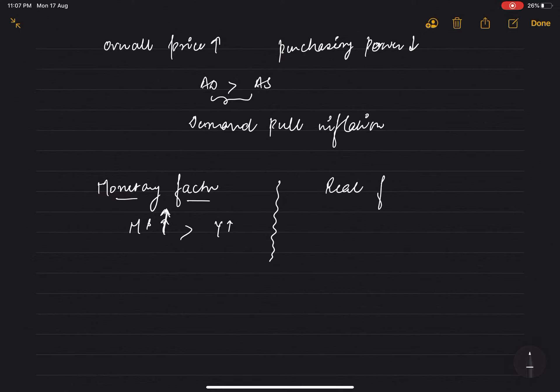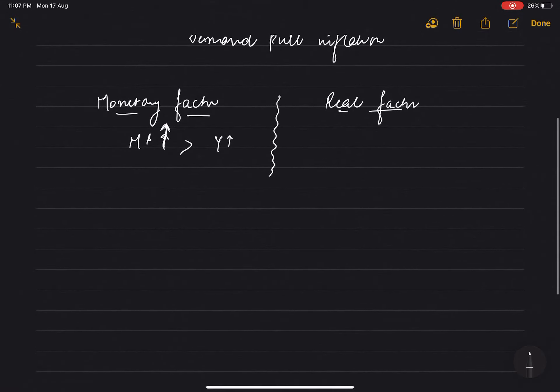Real factors also cause prices to increase. What are the real factors that cause inflation? First is increase in government spending. You know the formula - Y, which we also call AD, aggregate demand, is measured as: Aggregate demand equals C plus I plus G plus NX.